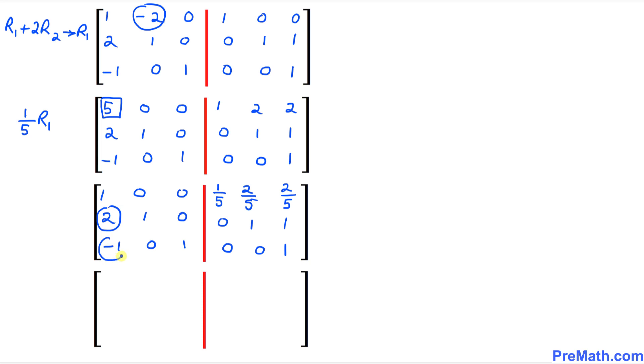And now we want to make these entries, 2 and negative 1, 0. So the only way we can make it 0 is if we can perform these operations. The first one is going to be row 2 minus 2 times row 1 and put it back to row 2. And likewise, I am going to put row 3 plus row 1 and put it in row 3.